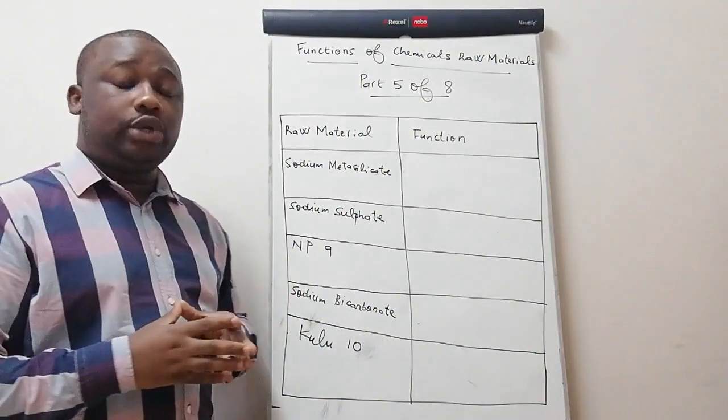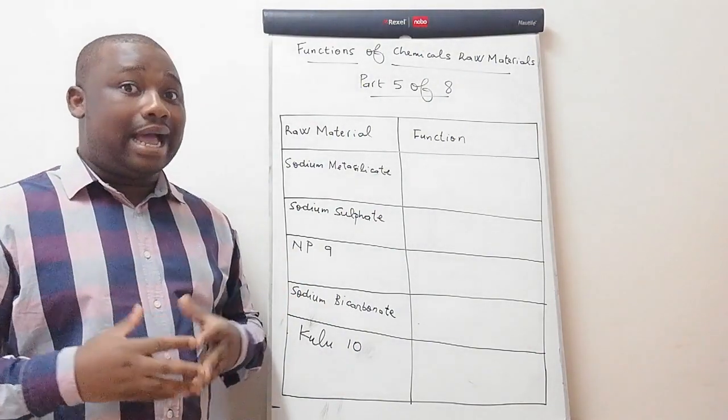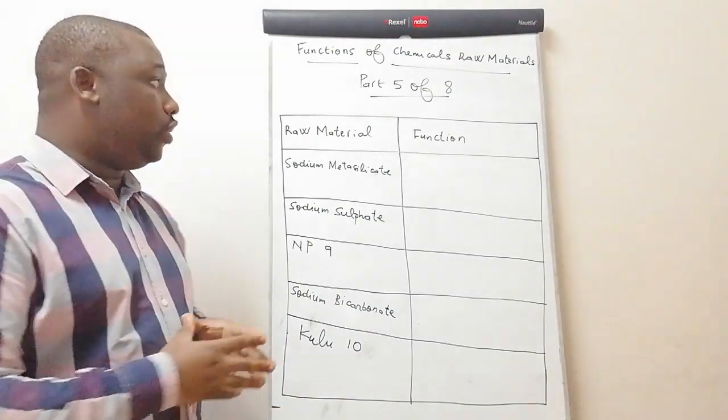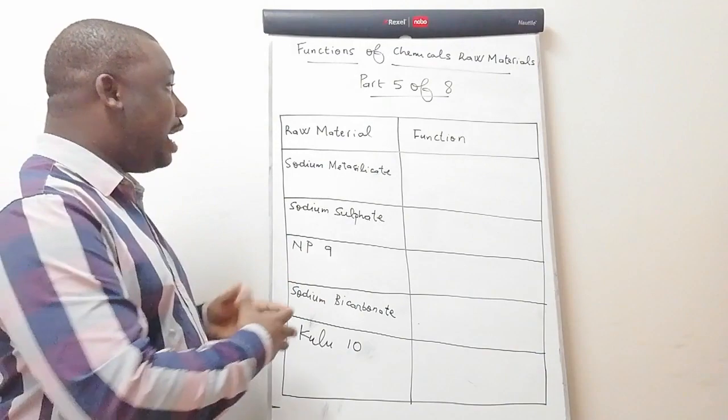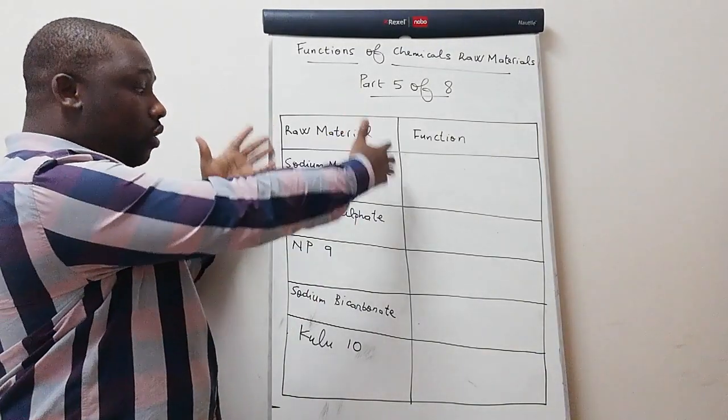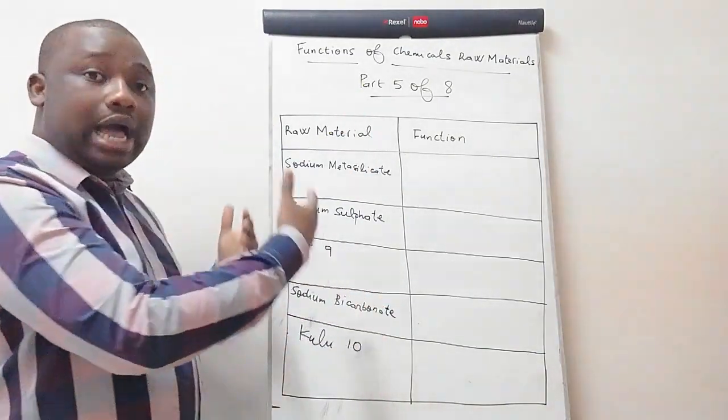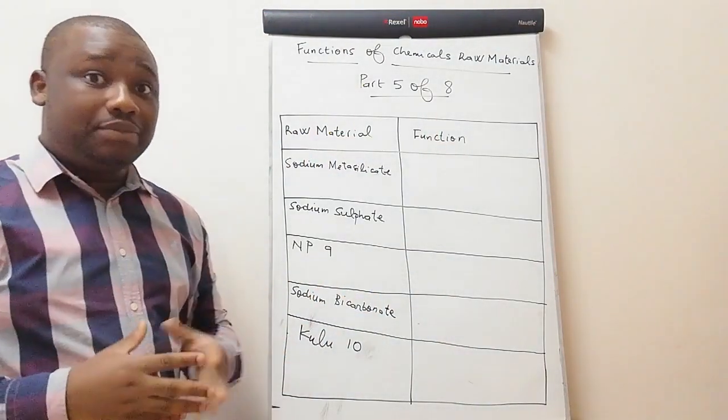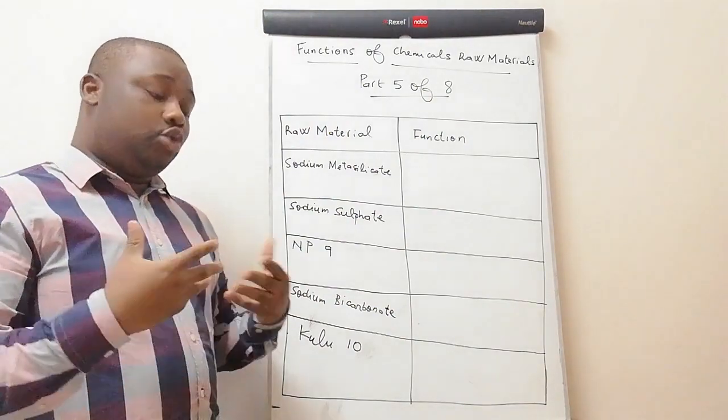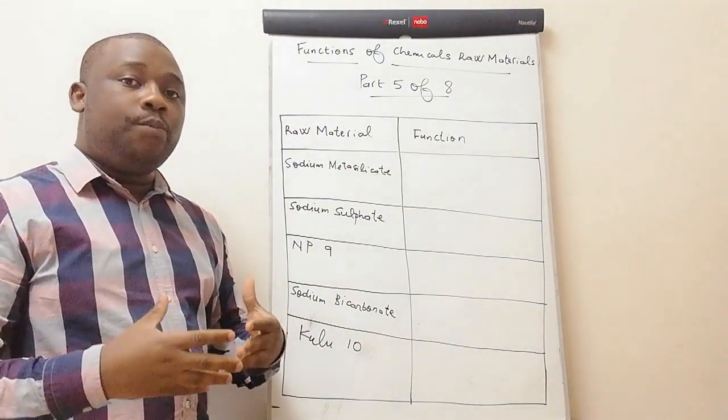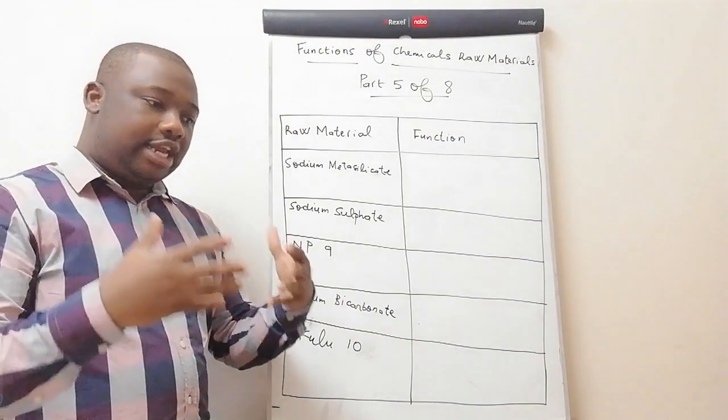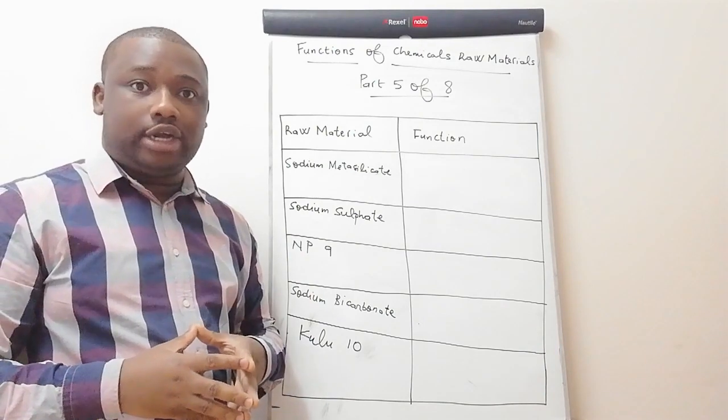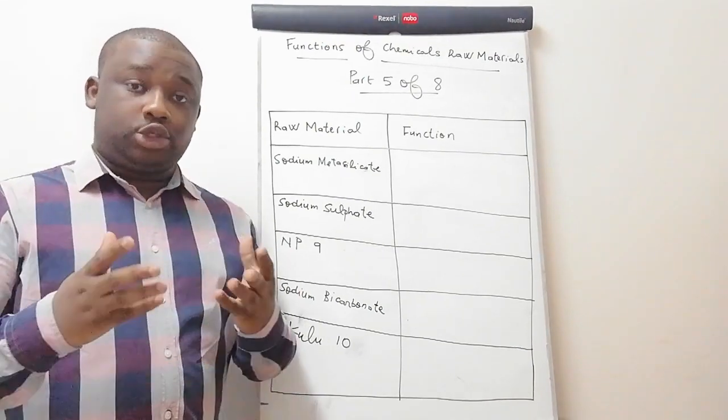So what is it that I'm going to show you in this video? As I said, I'm going to tell you about functions of chemicals. As you can notice, we do have a table on the board whereby I have raw materials or chemicals or ingredients on the left. I'll be telling you functions of each on the right. There's something you need to know: during your manufacturing process, when you know the function of each and every ingredient, it gives you a better direction while manufacturing. Make sure that you remain shown till the end so that you can learn this.